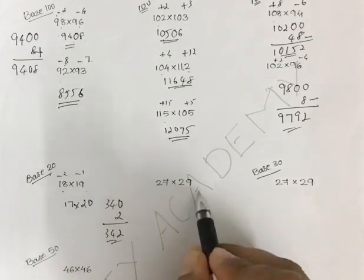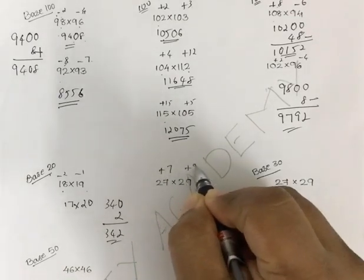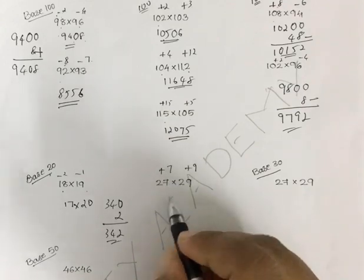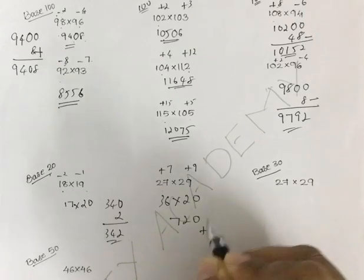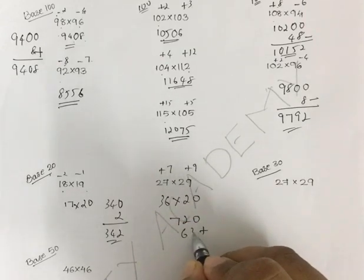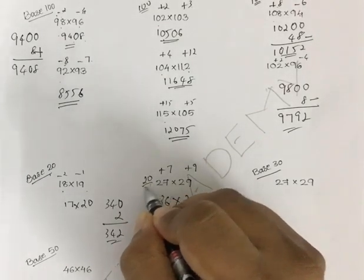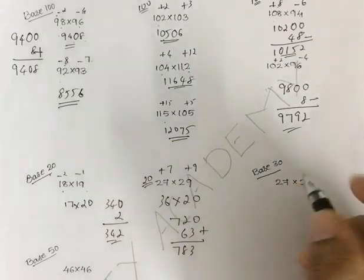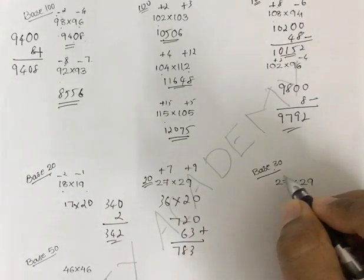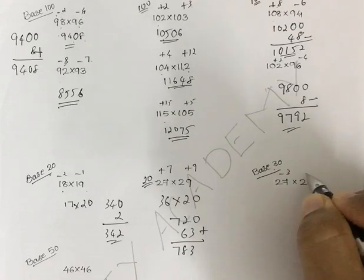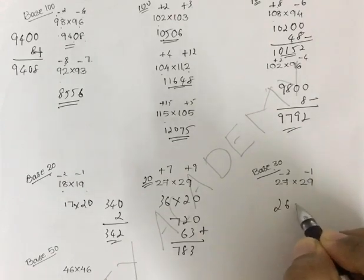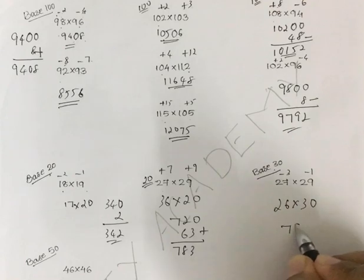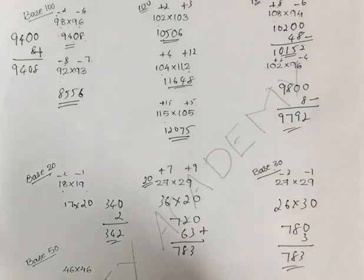For 27 into 29 using base 20, it is plus 7 and plus 9. 29 plus 7 is 36. Multiplying by the base 20 gives 720. To that, you add 7 times 9 which is 63. The answer is 783. This was done using 20 as base. The same example can also be done with 30 as base — 27 is 3 less than 30, 29 is 1 less than 30. 27 minus 1 is 26. Into base 30, you get 780. Adding the product gives 783. You got the same answer.